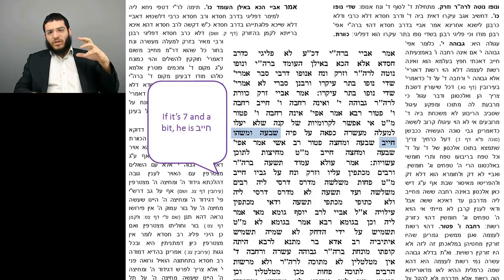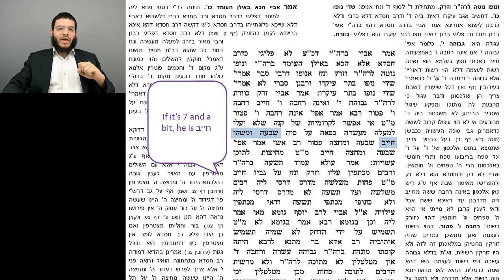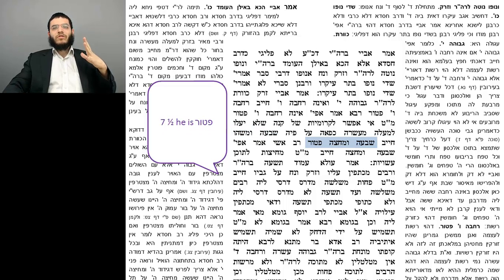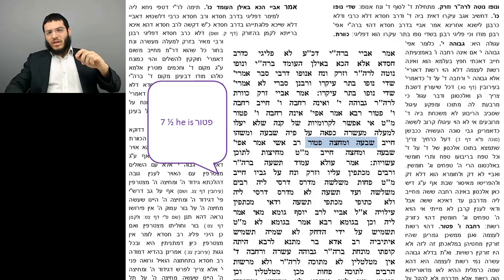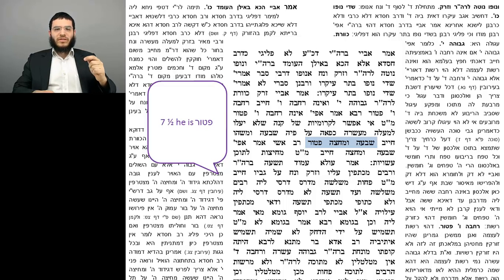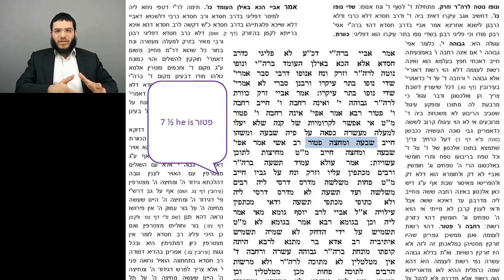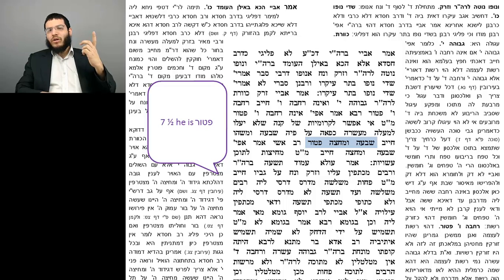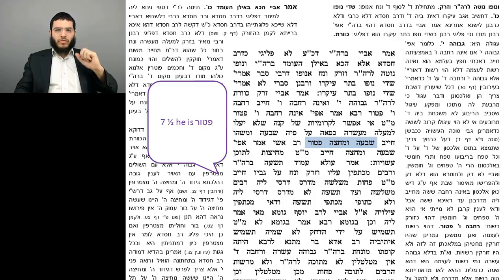So if it's 7.1 tefachim, the person will be chayev. If it's shiva umechitza — seven and a half, or more precisely 7.2 tefachim — he's patur. As Rashi explains, it doesn't mean exactly seven and a half but a little more than seven and a bit. So if it's 7.2 tefachim, the person will be patur. The reason is: when it's 2.9 tefachim from the ground we say lavud and the walls extend to the ground. But 2.9 plus 7.2 is 10.1 tefachim, so part of the basket is at rest in a makom petur, and therefore the person is patur.